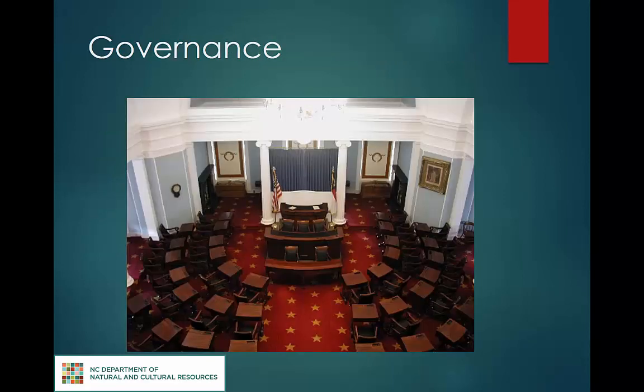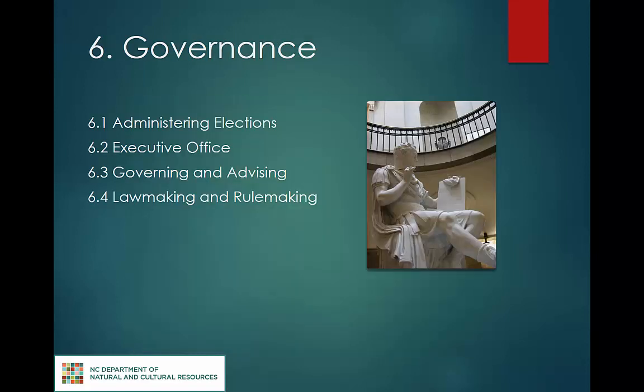The governance function involves the creation of statutes and regulations, agency liaisons with government officials, the oversight provided by governing or advisory bodies, and the collection of archival election records. The schedule also includes archival records from the offices of the Governor and Lieutenant Governor. Administering elections includes records such as voter abstracts and precinct maps. Executive office groups records from the Governor's and Lieutenant Governor's offices. Governing and advising covers charters and minutes. Lawmaking and rulemaking includes the North Carolina Administrative Code, laws, and resolutions.